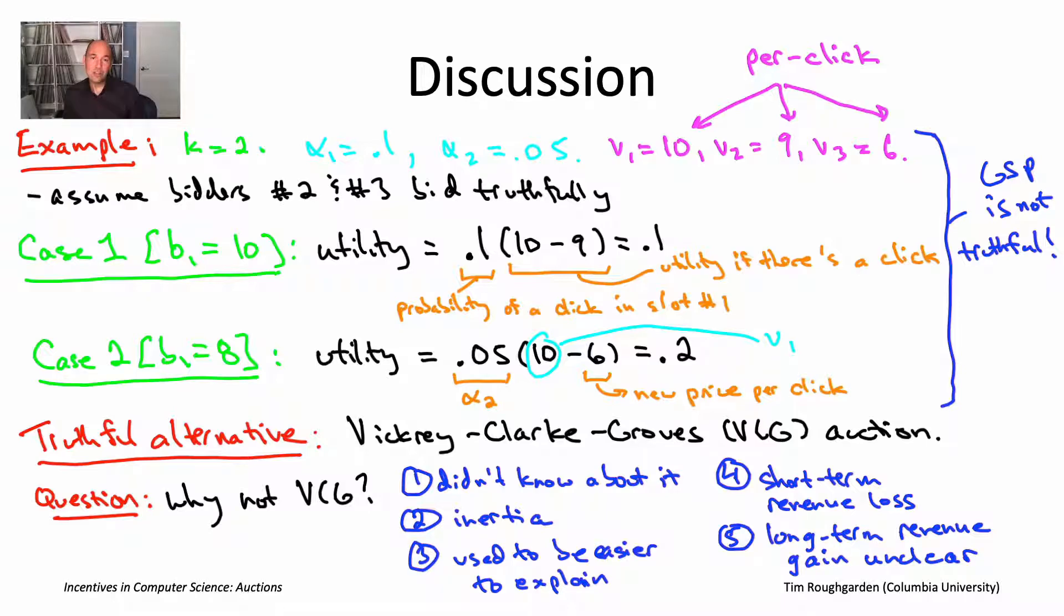So, as a result, given all of these other issues, there wasn't a compelling enough force to do it. And so that's why even though Google and other search engines have known for 18 years or so that there was this truthful alternative to generalized second price, you still dominantly see generalized second price out there in the real world.